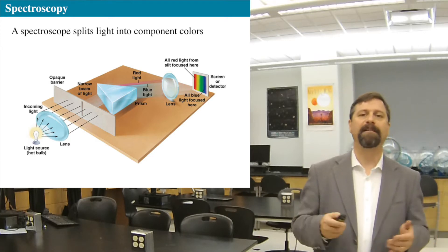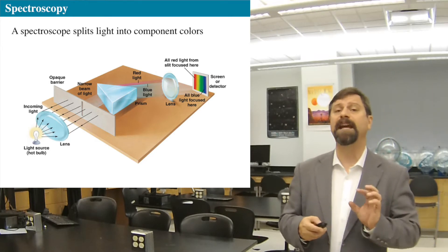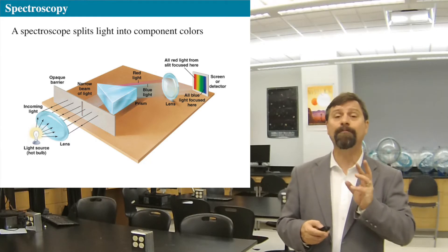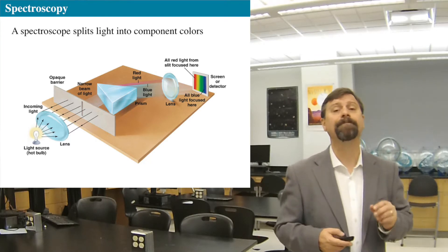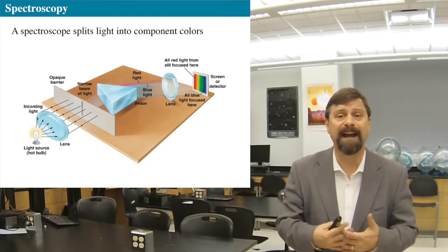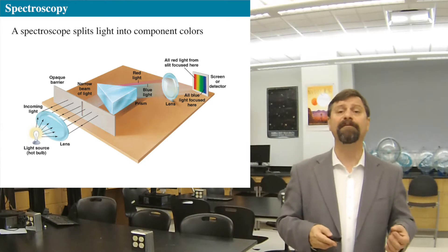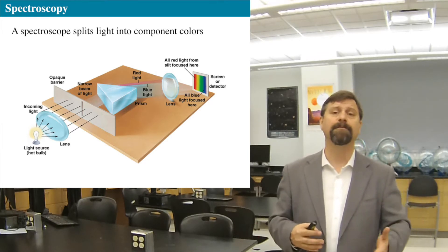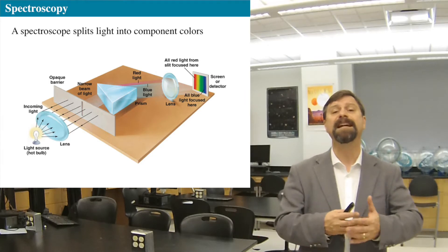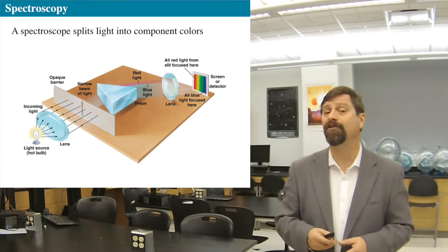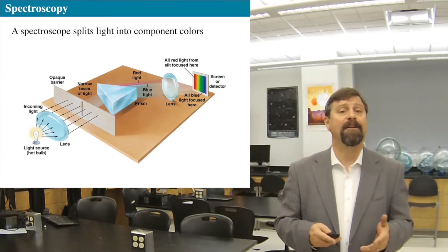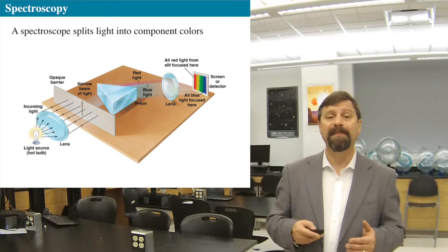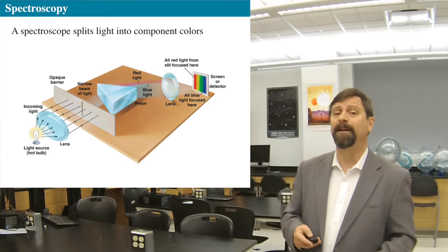We don't care about losing all that light because we're just going to analyze the light that comes to us. We pass it through a prism. The prism breaks apart the light because inside glass the speed of light is different for different wavelengths, so it spreads the light apart into its constituent wavelengths or frequencies. Then we take a picture of the incident light after it goes through the prism. And that is the study of spectroscopy.